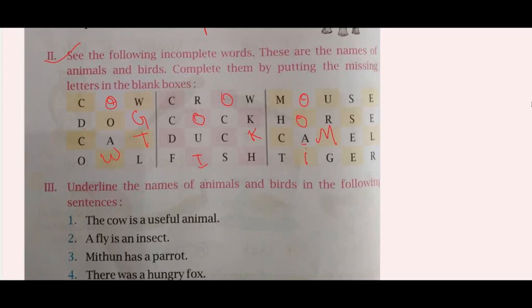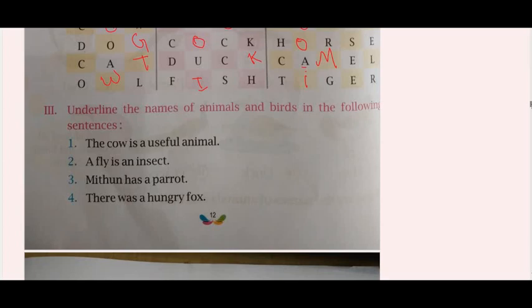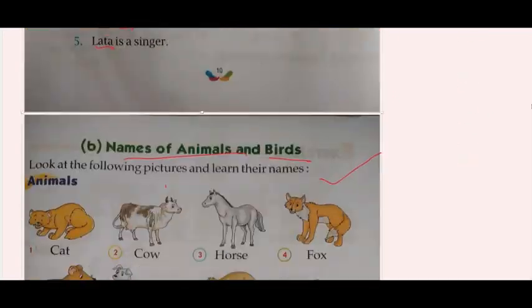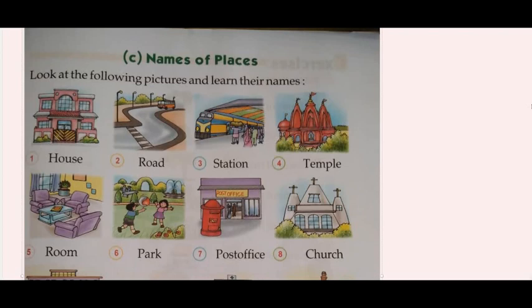So I have completed it. You have to take it as homework and write it in your copy. Now underline the names of animals and birds in the following — I will do this in the homework. The cow is a useful animal — underline 'Cow'. Fly, insect — insect is an animal. You have to underline the names of animals and birds. Okay? Next we will study names of places. Okay, bye, take care, learn and complete your answers.